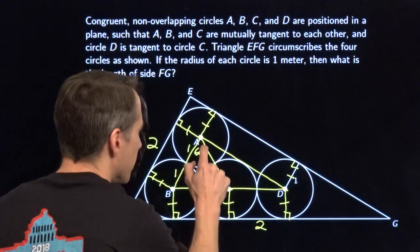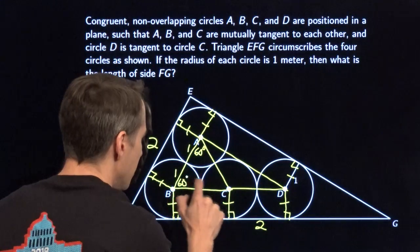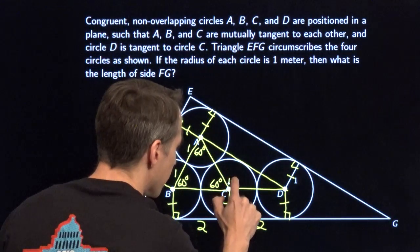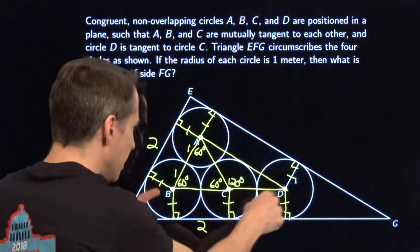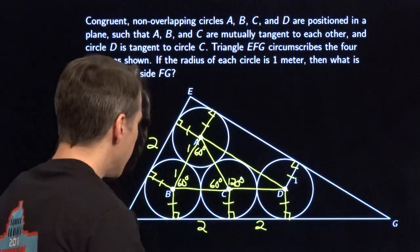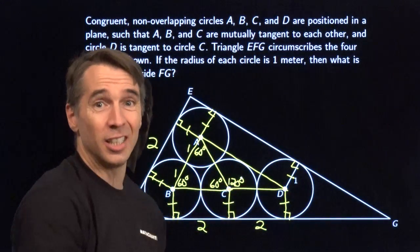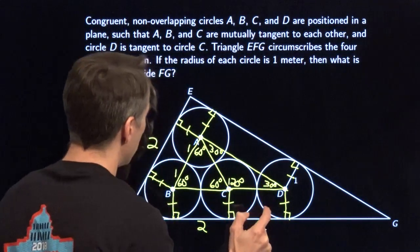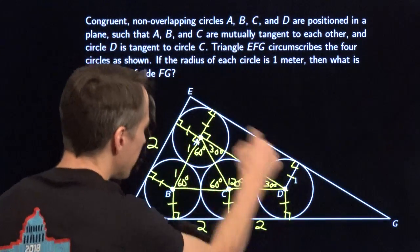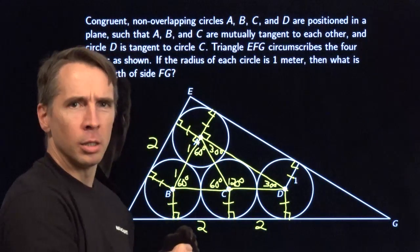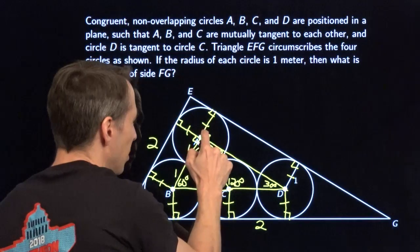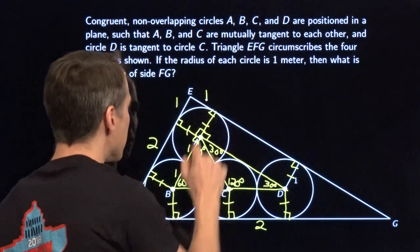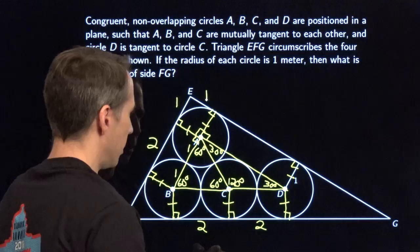So we're going to label some angles in here: 60 degrees, 60 degrees, 60 degrees. Well, what else do we know? That means this is 120 degrees, because that's a straight line. B, C, and D are all exactly one above FG. This triangle is isosceles because AC and CD are both two, so this is 30 degrees and this is 30 degrees. We've got rectangles out here and rectangles here, and this is a right angle and this is a right angle. That means this angle right in here is 90 as well. This thing up here, that's a square, so this is one and this is one.